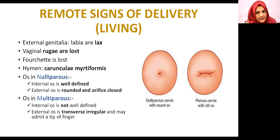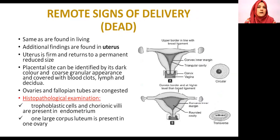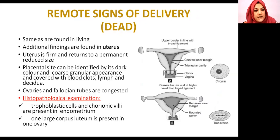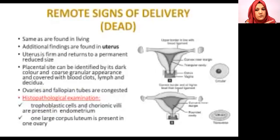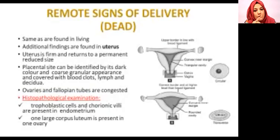When examining remote signs of delivery in the living or dead, findings in the uterus show whether it has returned to normal. There is a difference between nulliparous and multiparous uteruses: in the nulliparous the upper border is horizontal and the cavity is triangular, while in the multiparous the upper border is convex and the cavity is rounded. The os is circular in nulliparous and transverse in multiparous females.